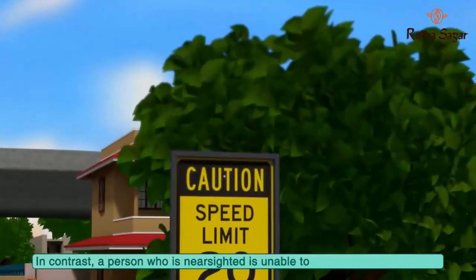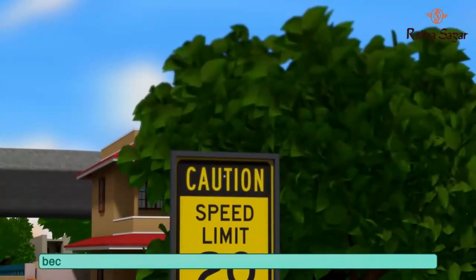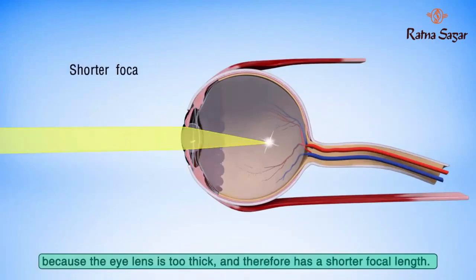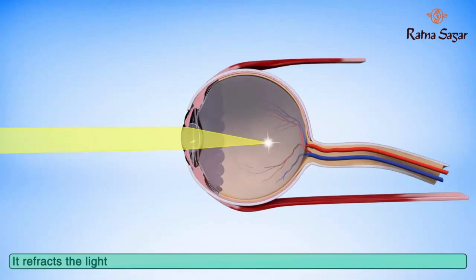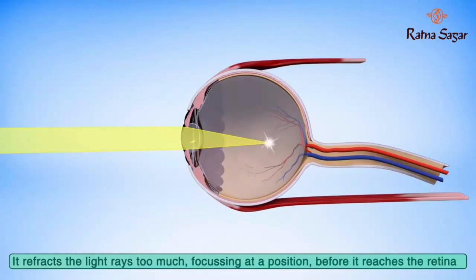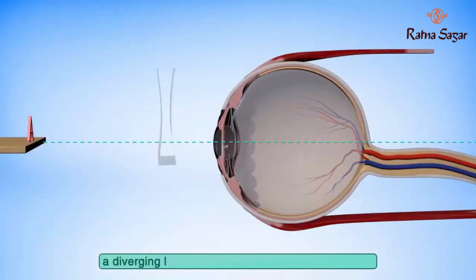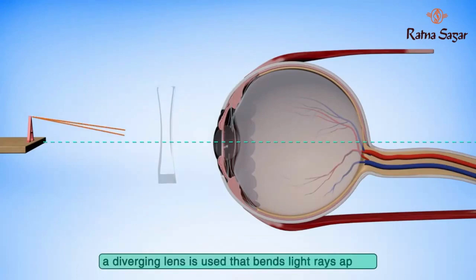In contrast, a near-sighted person is unable to focus on distant objects because the eye lens is too thick and therefore has a shorter focal length. It refracts the light rays too much, focusing at a position before the retina. To compensate for near-sightedness or myopia, a diverging lens is used that bends light rays apart.